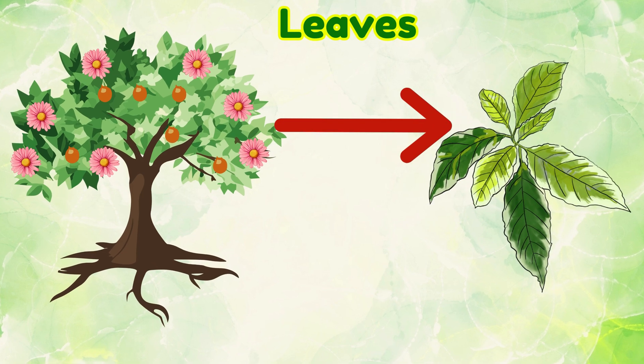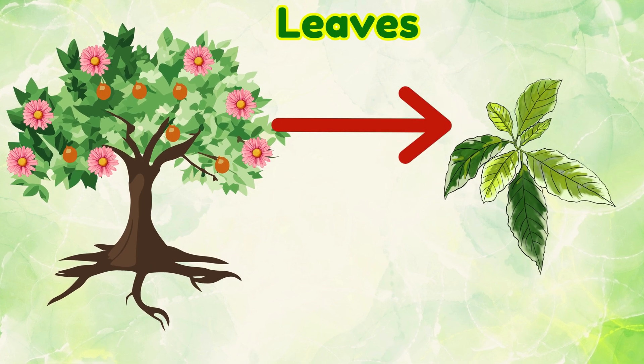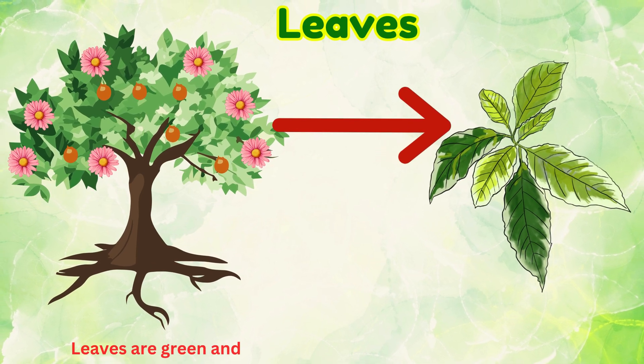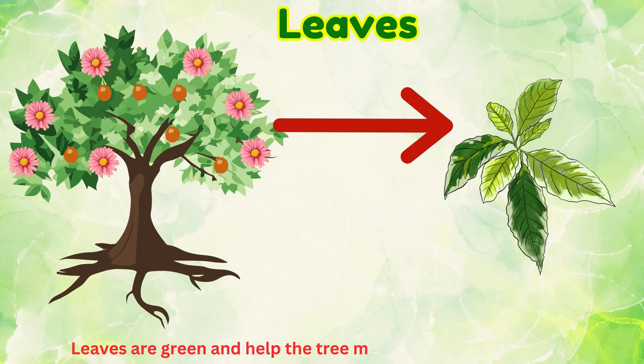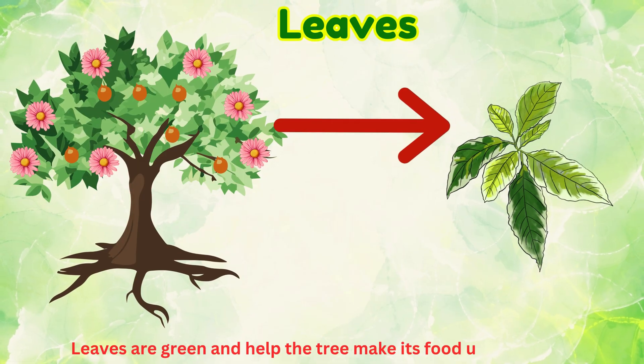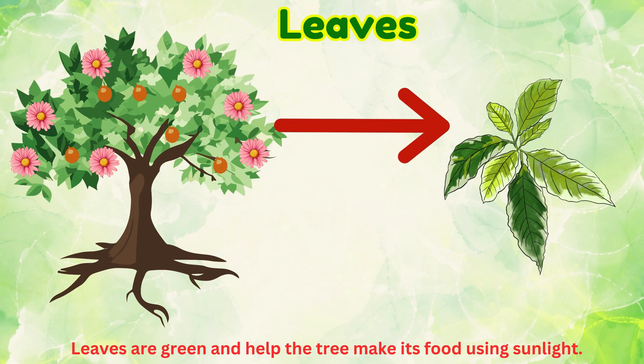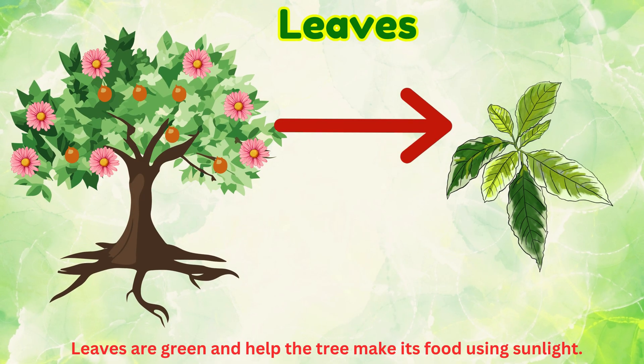Leaves. Leaves are green and help the tree make its food using sunlight.